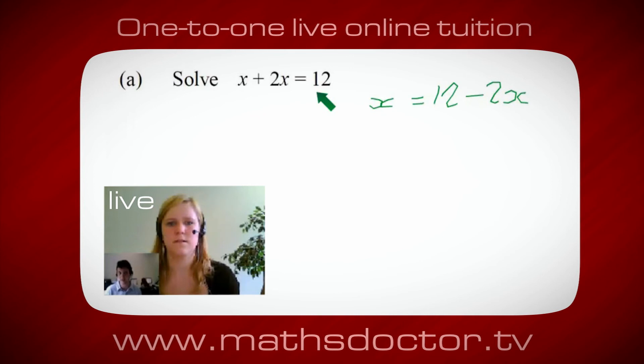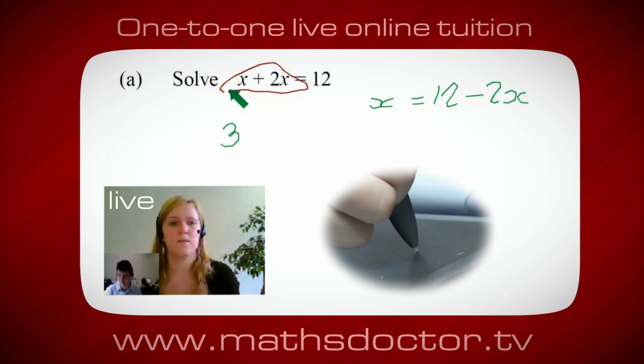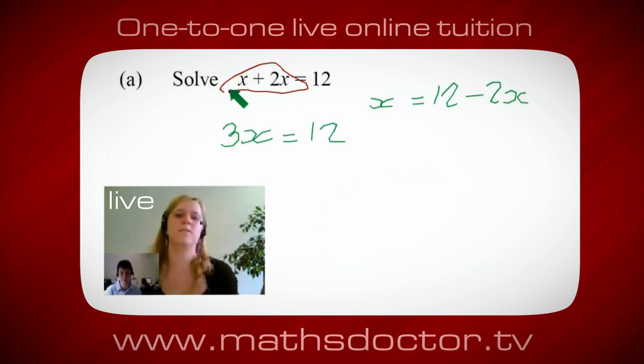Okay, so a lot of the time we want to get x by itself but what we want to do first is get all of these x's together. So can you see anything we can do with this? Get all these together in one place. Okay, it's 3x isn't it? Yeah, absolutely. So 3x equals 12. Oh, and so x equals 4.